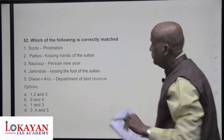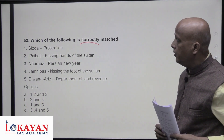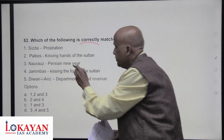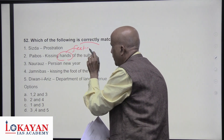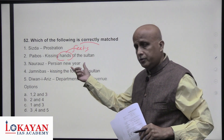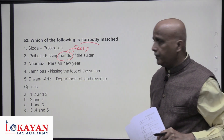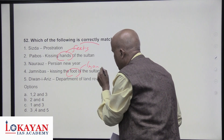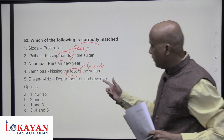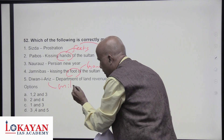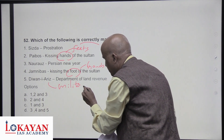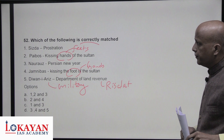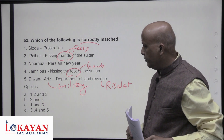Which of the following about Balban's court is correctly matched? Sijda was prostrating before the sultan — kissing the feet, not the hands. Paibos was kissing the feet of the sultan. Nauroze was a Persian New Year started by Balban, practiced for nearly 800 years. Jharoka was kissing the hands of the sultan. Diwan-i-Arz is the department of military started by Iltutmish — not land revenue. So statements one and three are correct — answer is C.